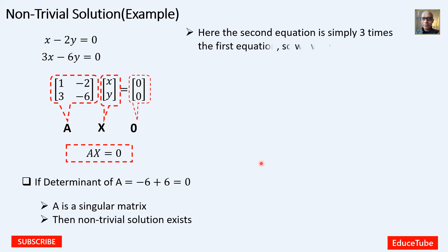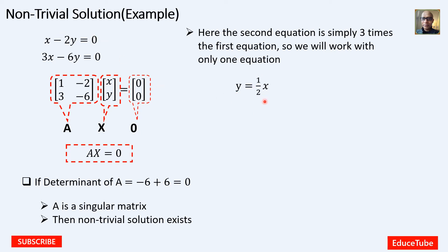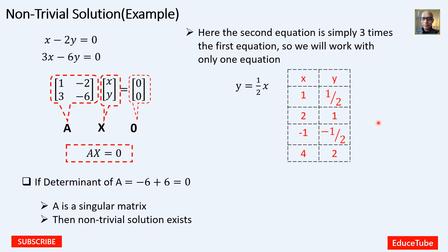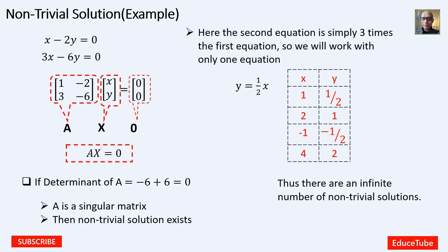We can see that the second equation is 3 times the first, because of the coefficients 3 and 6. So we work only on the first equation and get Y equal to one-half X. Once we have this relationship between X and Y, we can make a table by assuming values of X. For X equal to 1, Y equals one-half; for X equal to 2, Y equals 1, and so on. This means there are an infinite number of non-trivial solutions.